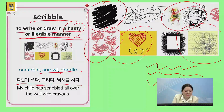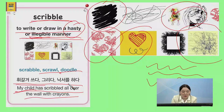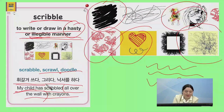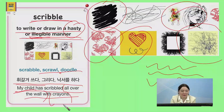So, you could say: My child has scribbled all over the wall with crayons. 우리 애가 벽에 온통 낙서를 해놓았습니다. They just randomly drew all over the wall with crayons — crayon으로.